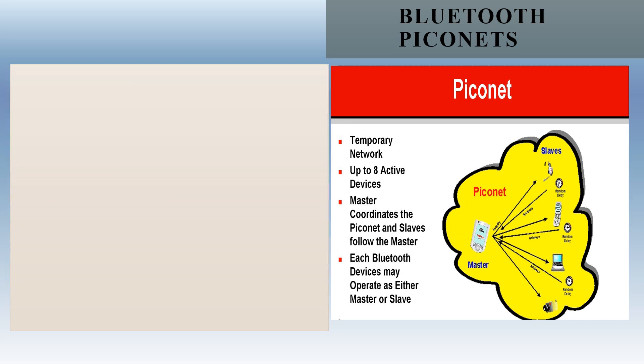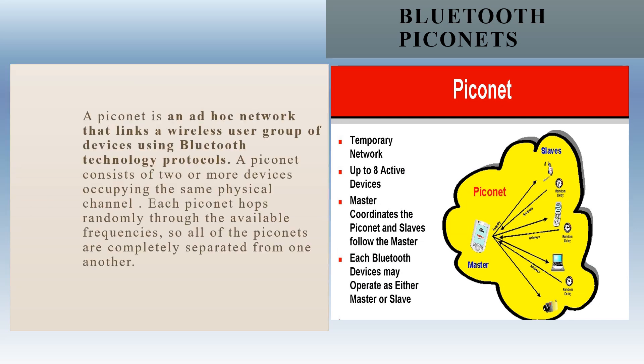Let us see what Bluetooth Piconet is and what its role is. Bluetooth Piconet is an ad hoc network that links a group of users using Bluetooth technology protocols. It is a temporary network that allows one master device to interconnect with 7 active slave devices. Further, up to 255 slave devices could be inactive, and the master device can bring them into active status at any given point of time. Each Bluetooth device may operate as either a master or a slave.